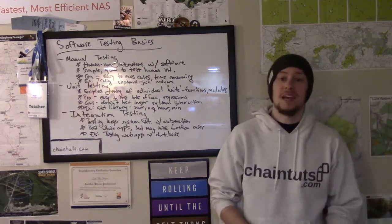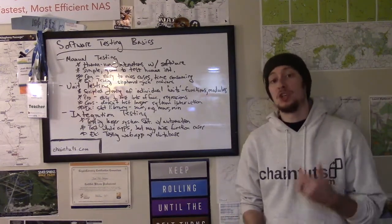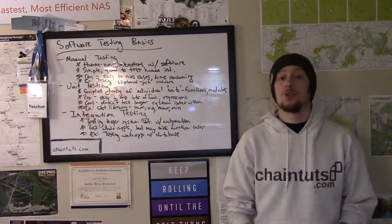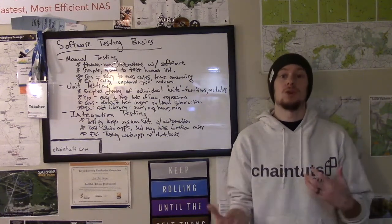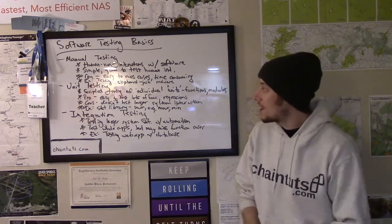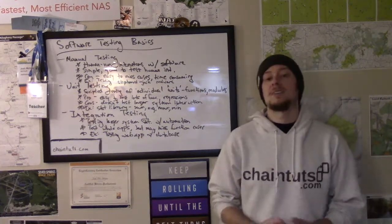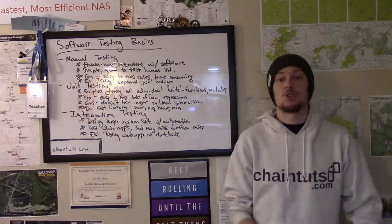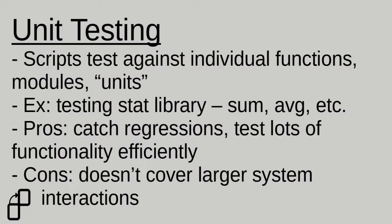The next type of testing we're going to talk about is unit testing. This begins our dive into automated or scripted forms of tests that you can run against your software. Unit testing is scripted testing of individual units — for example, functions or modules. A simple example of this would be if you have a library that calculates statistics on a list of numerical data. So let's say you have a software library that allows you to calculate the sum, the average, the max, and the min of a list of data.